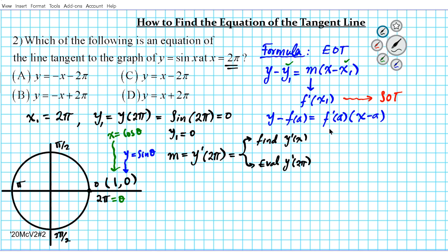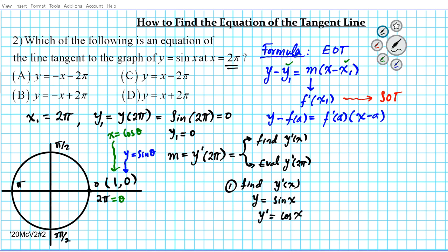Moving right along, we're going to break it up and do it one at a time. Part one: we want to find the derivative of the function. The function itself is sine x. So the derivative y prime — the derivative of sine is cosine — so y prime is cosine x. This is the slope of the tangent line at any x value.